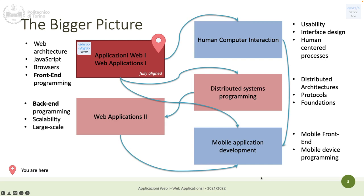From here you can move to different paths. You can focus more on usability — how to design a user interface with a human-centered process. Or you can go to distributed system programming, which focuses more on the back end, leveraging what we do here. From everything, you can also choose to do mobile application development, such as Android.